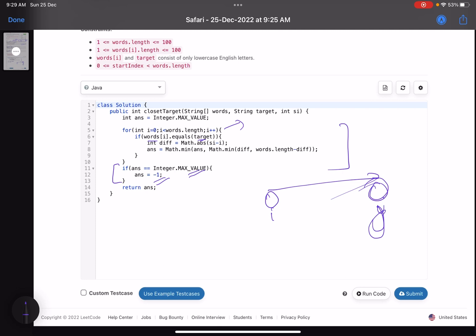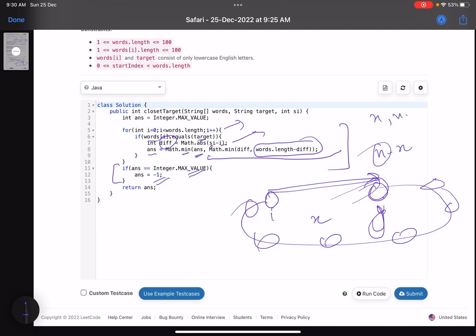The other value if you move in the other direction will be n minus x, where n is the number of nodes. So diff is absolute value of the starting index and the current index. You update your answer by: answer equals math.min of answer and then math.min of the difference that you calculated and words.length minus diff. So x and n minus x.